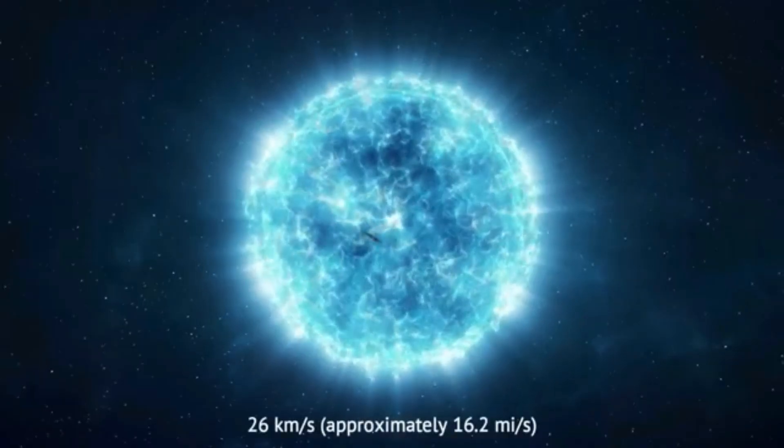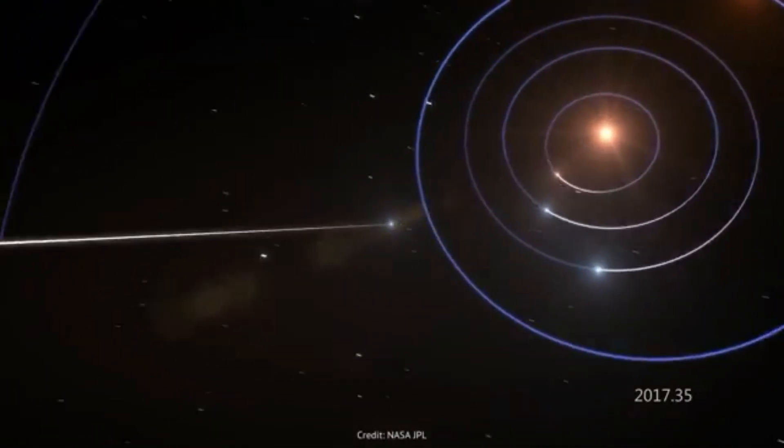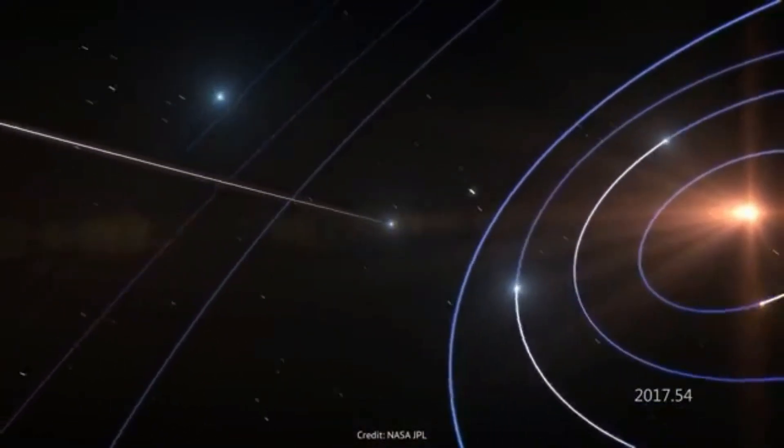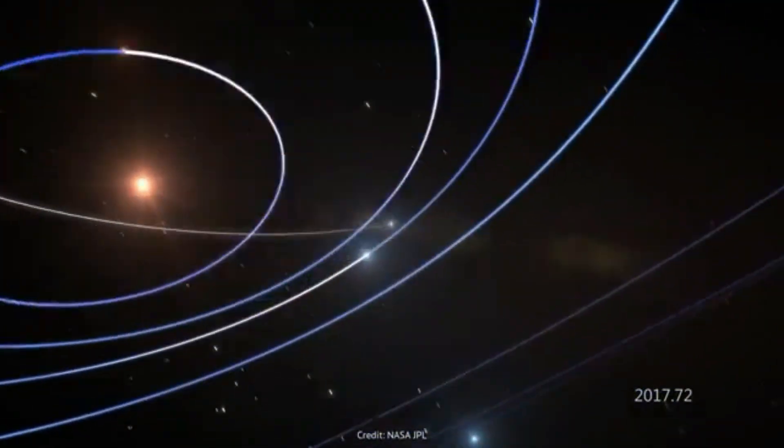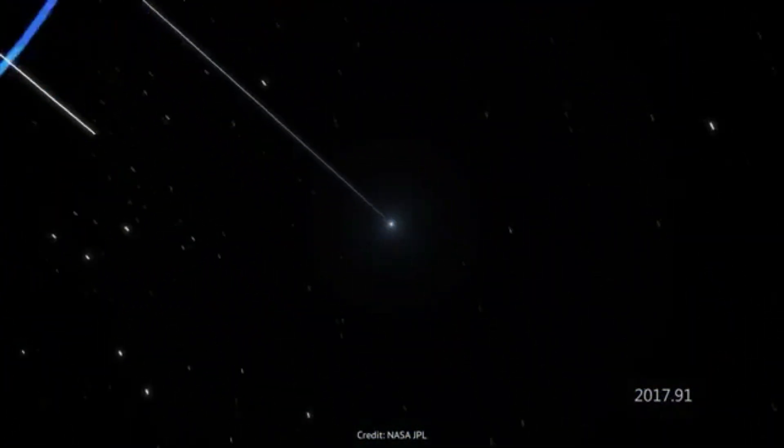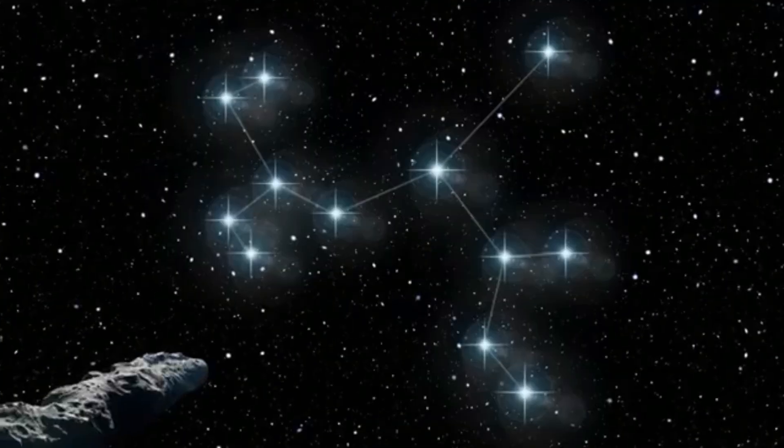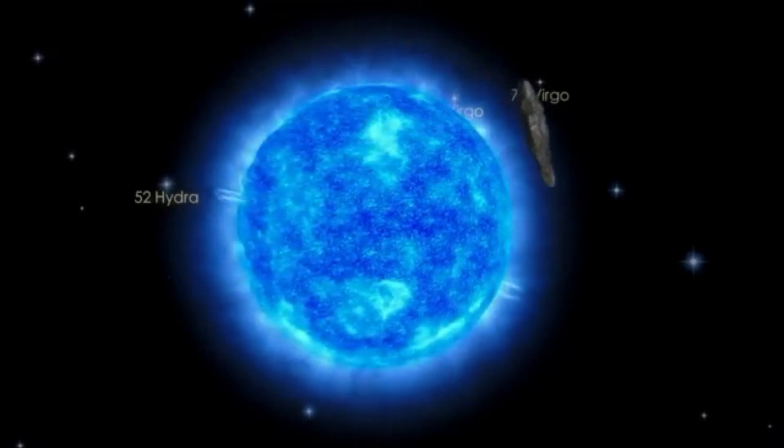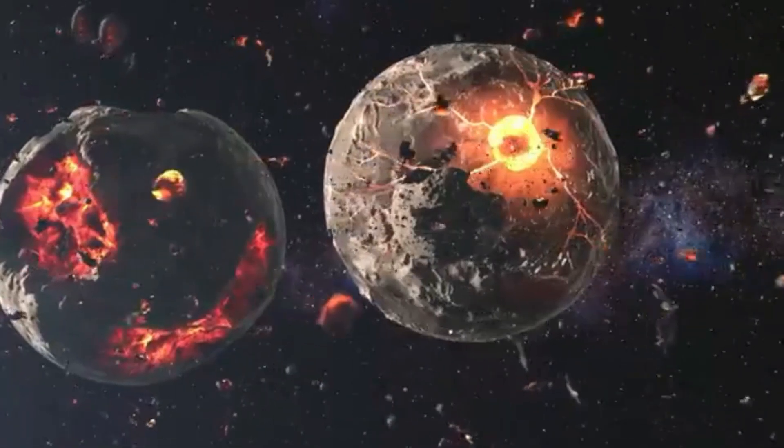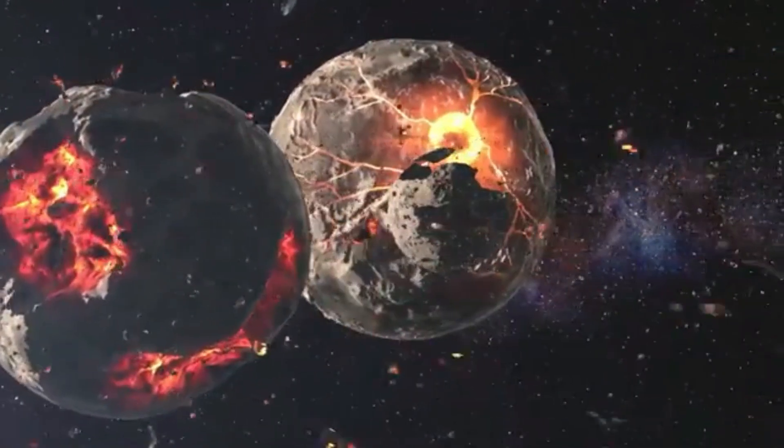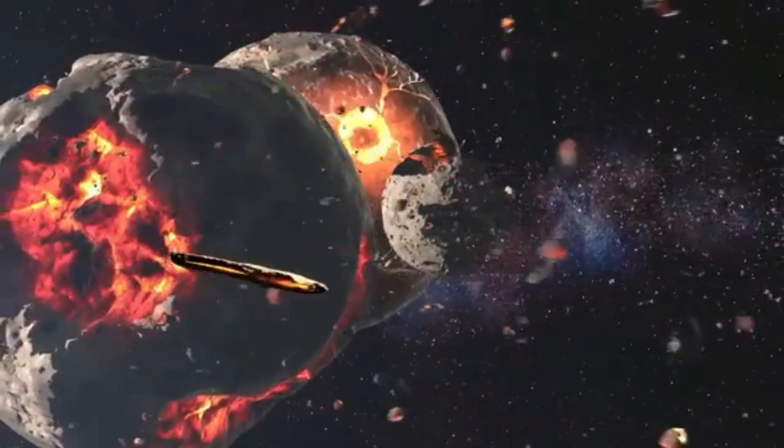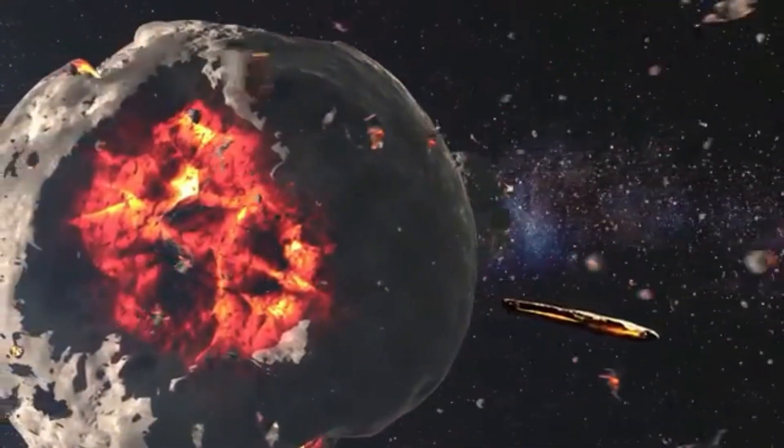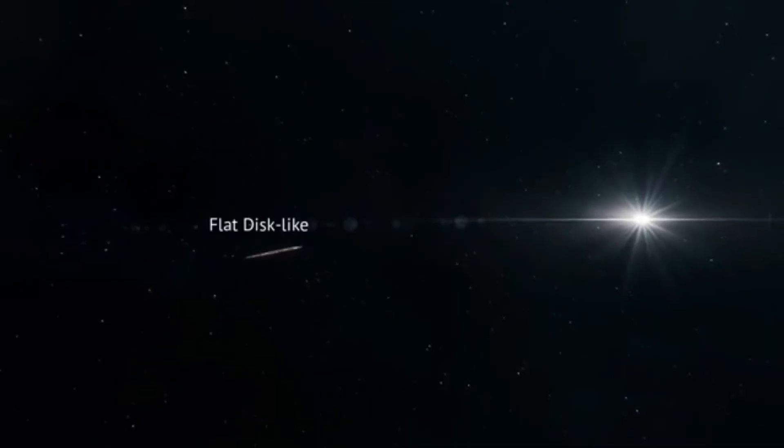We live on a tiny world orbiting an average star in a galaxy filled with billions more. Objects like Atlas remind us that we're not alone, not just in space, but in time. They are cosmic echoes from places we may never see, carrying secrets we're only beginning to understand. So the next time you look at the stars, remember, one of them might be watching back.